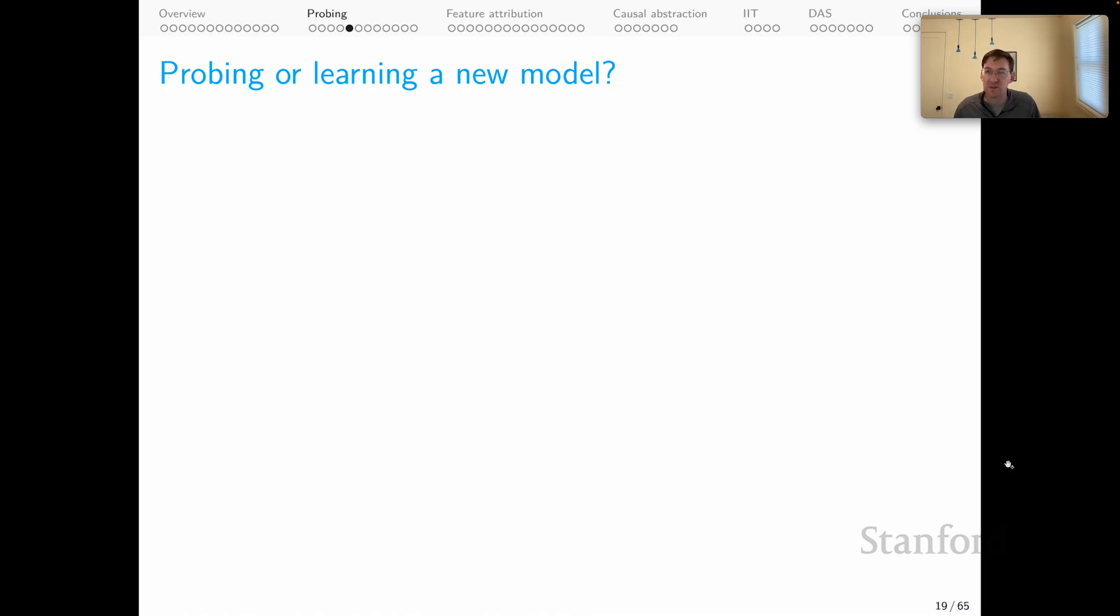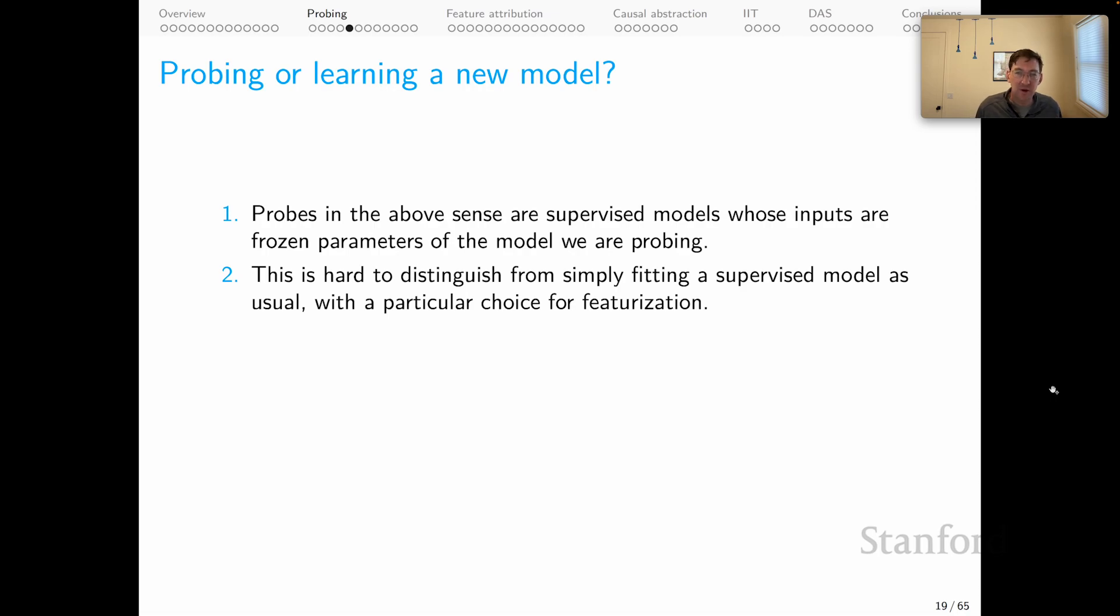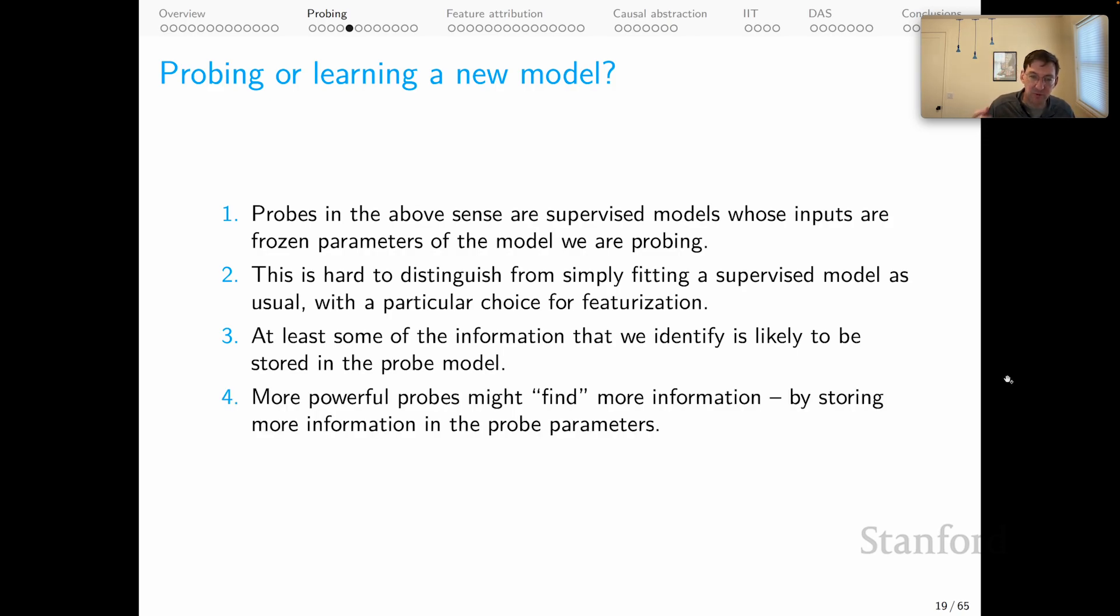The first question that arises for probing is really pressing. Are we probing the target model or are we simply learning a new model? That is the probe model. Probes in the current sense are supervised models whose inputs are frozen parameters of the model we're probing. We use the BERT model as a kind of engine for creating these feature representations that were the input to a separate modeling process. This is very hard to distinguish from simply fitting a supervised model as usual with some particular choice of featurization. The site that we chose based on how BERT did its calculations. So based on one and two, we know that at least some of the information that we're identifying is likely stored in the probe model, not in the target model. And of course, more powerful probes might find more information in the target model, but that's only because they're storing more information in the probe parameters. They have a greater capacity to do that.